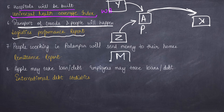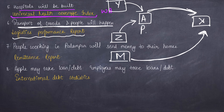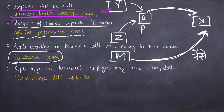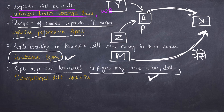Now consider a person M whose family lives in city X — he sends money to his family. The money he sends is captured in the Remittance Report, which represents how much money is going out to families from a given place. That report is also published by the World Bank. Additionally, Apple or its employees can take loans or debt, and therefore International Debt Statistics — data related to debt — is also published by the World Bank.